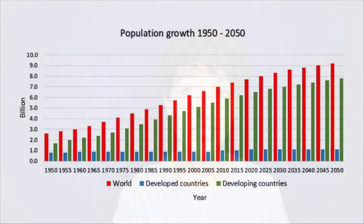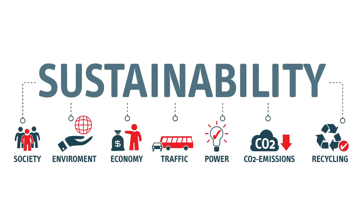According to estimates compiled by the Food and Agriculture Organization, by 2050 we will need to produce 60% more food to feed a world population of 9.3 billion people. Sustainability is defined as the avoidance of the depletion of natural resources in order to maintain an ecological balance that supports all life on Earth. Our current use of phosphorus is anything but sustainable.